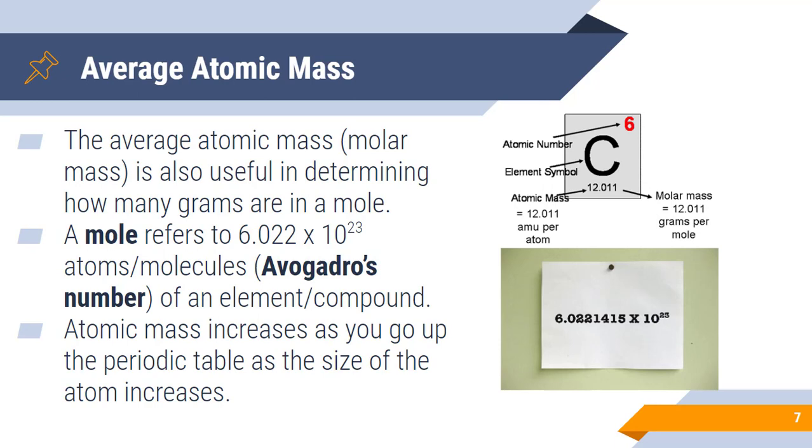Now, keep in mind that the average atomic mass, also known as the molar mass, is very useful in determining how many grams are in a mole of something. If you remember back from general chemistry, a mole refers to 6.022 times 10 to the 23rd atoms or molecules, this is also known as Avogadro's number, of an element or compound.